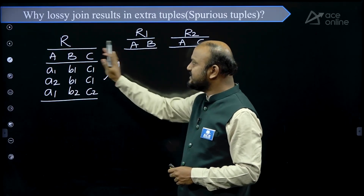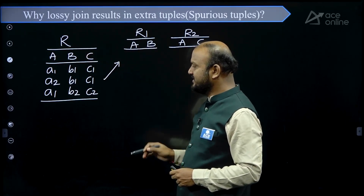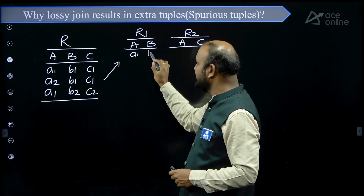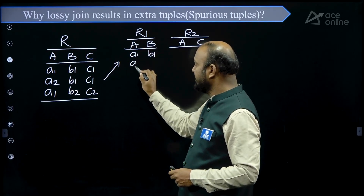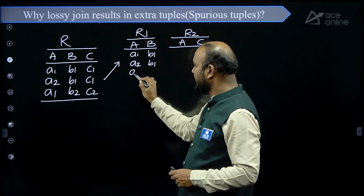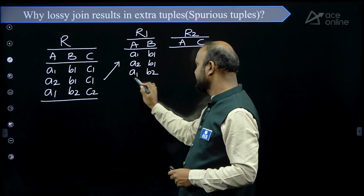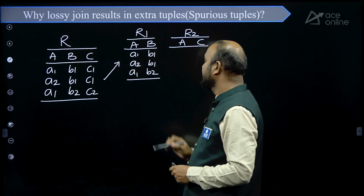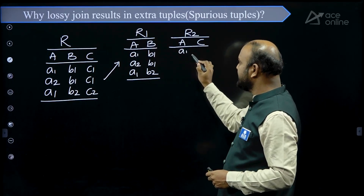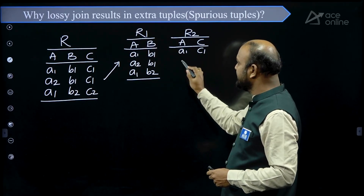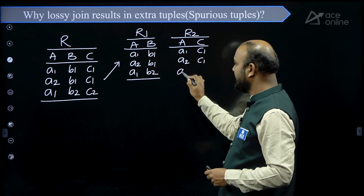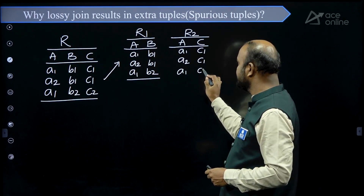Now what will be the tuples in R1? R1 will have tuples: A1, B1; A2, B1; A1, B2. And for R2, the A, C combinations are: A1, C1; A2, C1; and A1, C2.